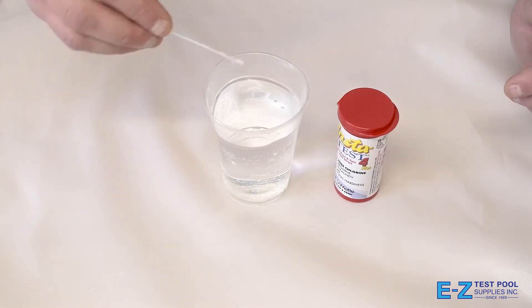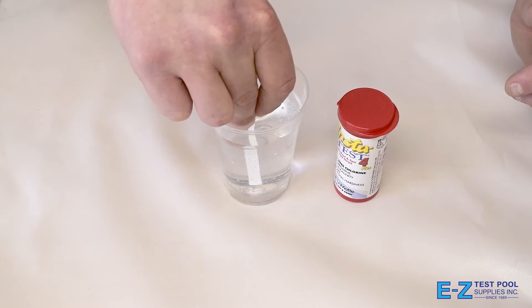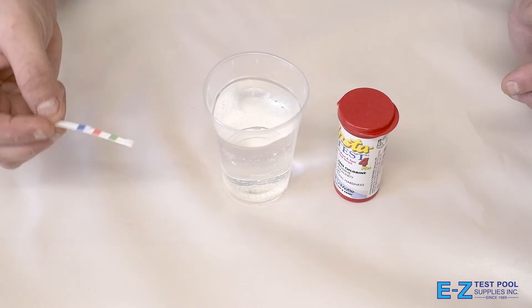Begin by taking one of the test strips and submerging it under the pool water about six inches and holding it there for about five seconds. At that point, remove it from the water and allow it to dry.